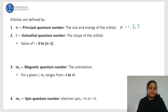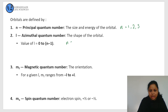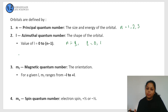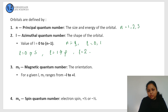Our second quantum number is l, the azimuthal quantum number, which tells us about the shape of the orbital. The value of l can range from 0 to n minus 1. Depending on the value of l, we have different orbitals of different shapes. If l equals 0 we have s orbital, l equals 1 gives p orbital, l equals 2 gives d orbital, and l equals 3 gives f orbital.